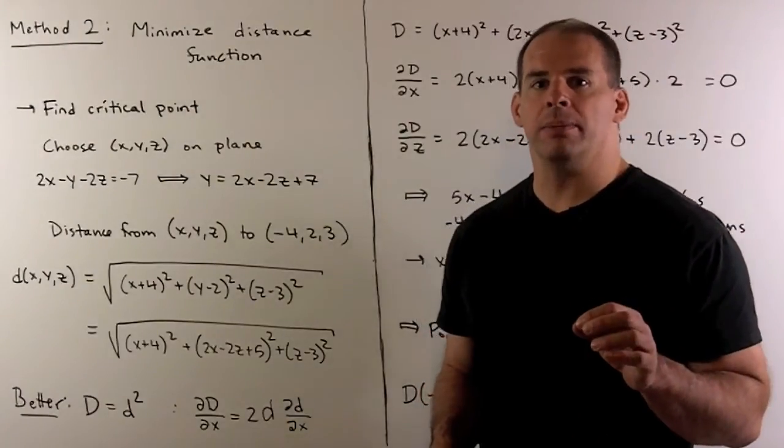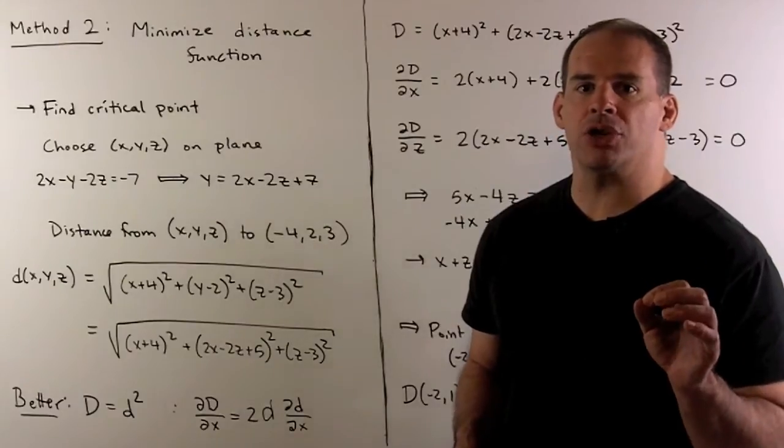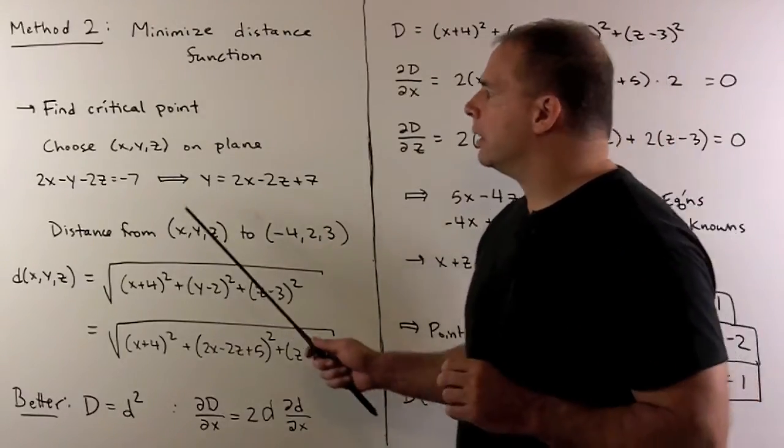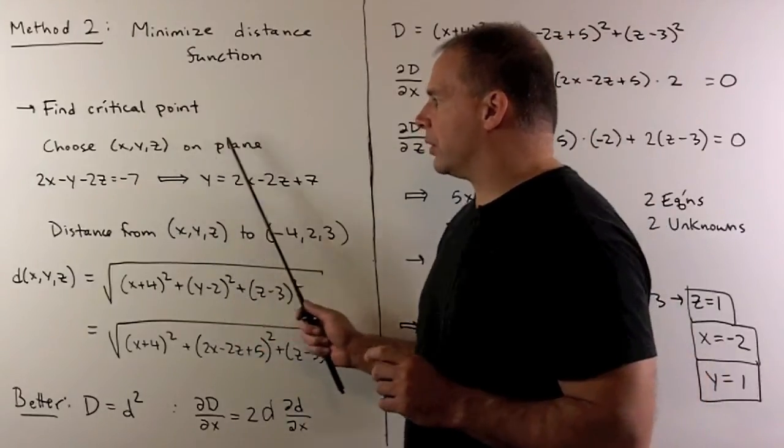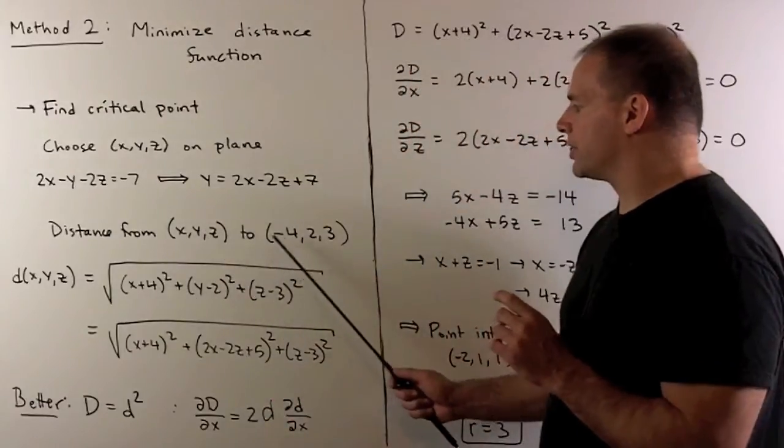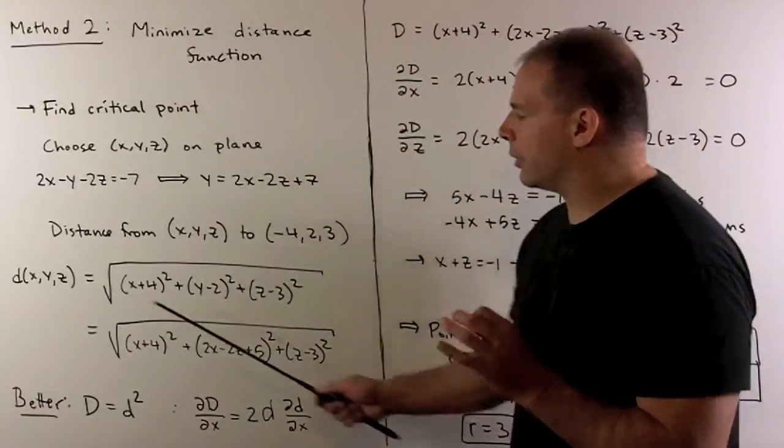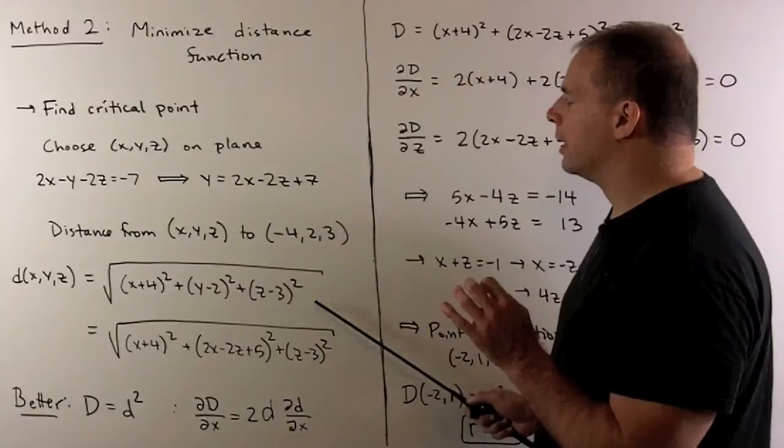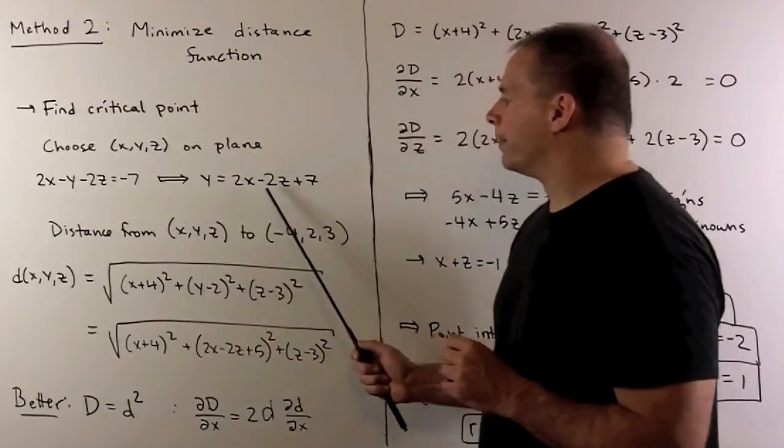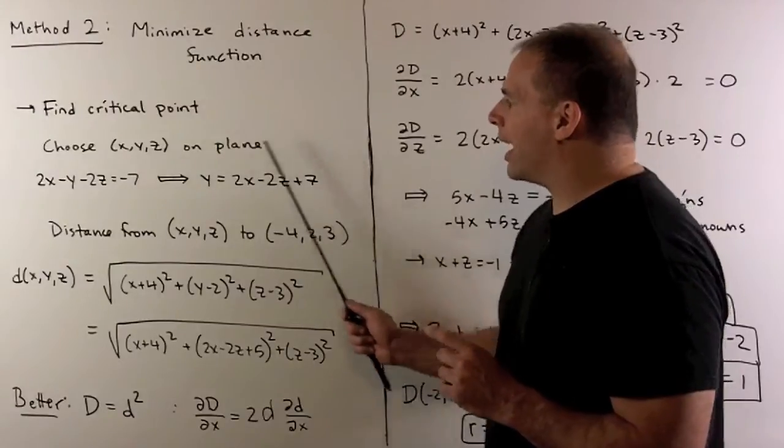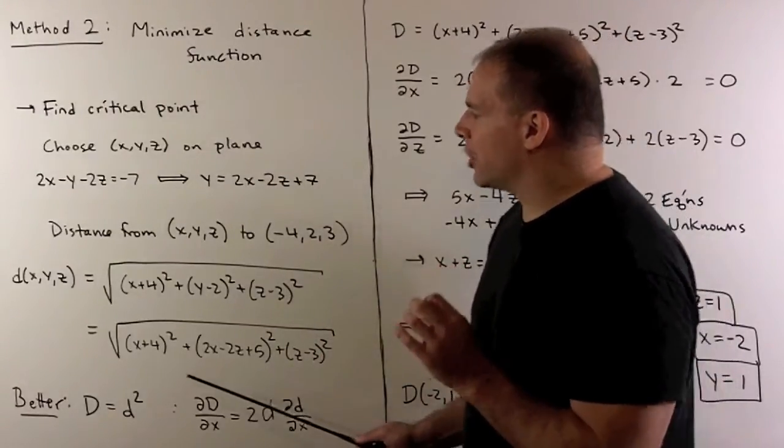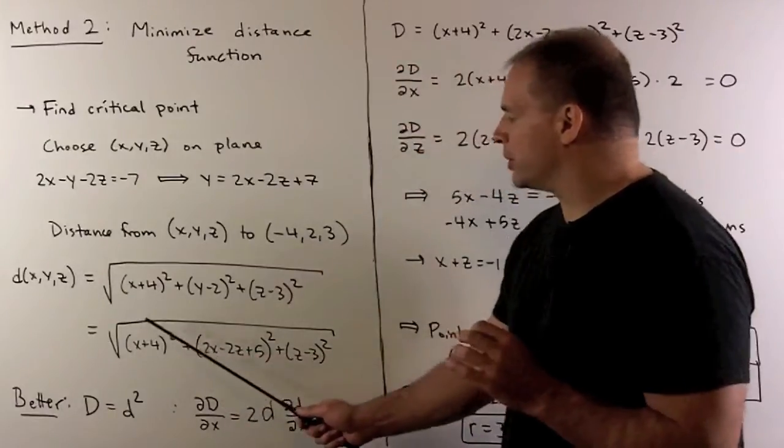For our second method, we minimize the distance function by finding a critical point. Now, we're going to choose x, y, z on the plane. We're going to form the function given by the distance from x, y, z to the center of the sphere. And we get this function here. Then we're going to take the equation of the plane and isolate y. So now I can substitute this expression in for y. We have a function for distance entirely in terms of x and z.